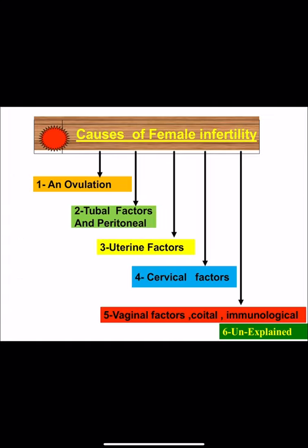The major causes of female infertility can be divided as follows: number one, anovulation, which is the major cause of primary infertility; number two, tubal and peritoneal factor, which represents the major cause in secondary infertility; number three, uterine factor, which prevents implantation; followed by cervical factor, vaginal factor, coital and immunological factor; and if no cause is found, we call it unexplained infertility.